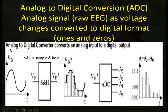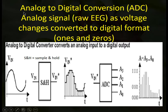As we measure EEG on the scalp surface, we're measuring analog information — voltage changes. We're measuring voltage changes in relation to the two input electrodes compared to the system reference or ground. There is an analog to digital conversion system — an analog to digital converter — that converts these voltage changes into ones and zeros through a signal processing mechanism in the amplifier following common mode rejection. First we have common mode rejection, then the resulting signal goes into a sample and hold circuit.